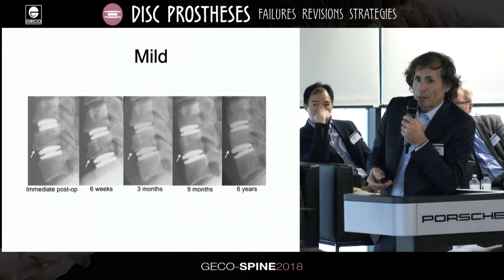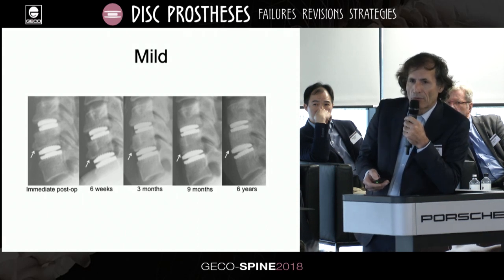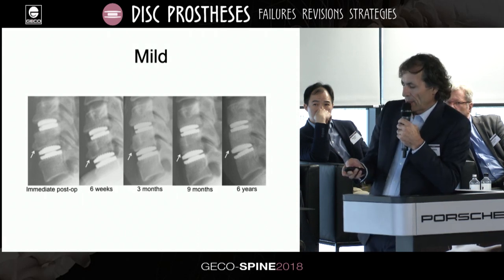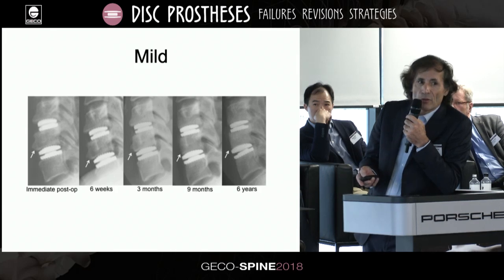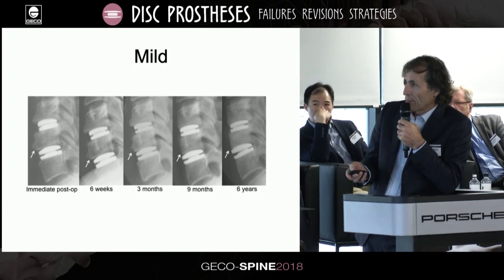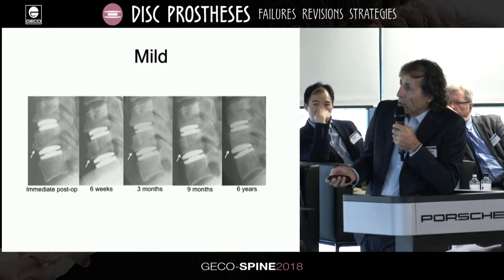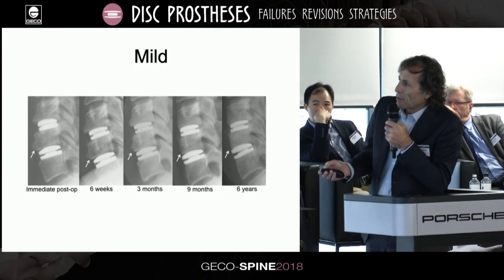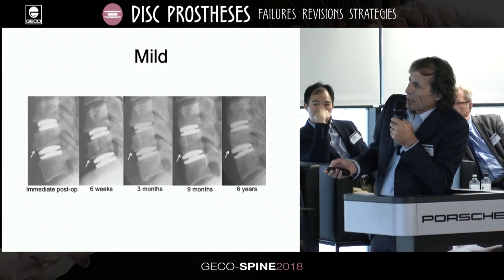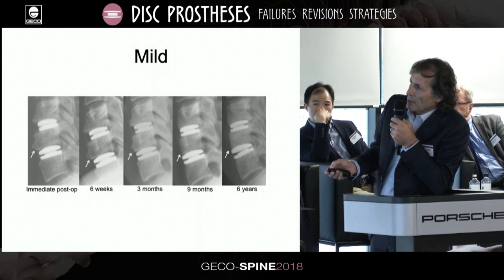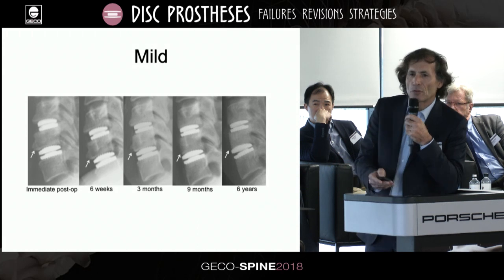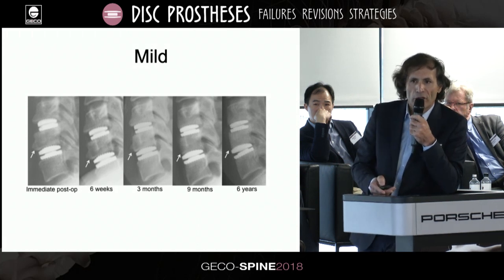Here is a typical case of multi-level CDA showing the natural history of ABL. ABL appears before three months, at three months, and new bone formation is seen at six years. There is no subsidence and no uncoverage of the implant.